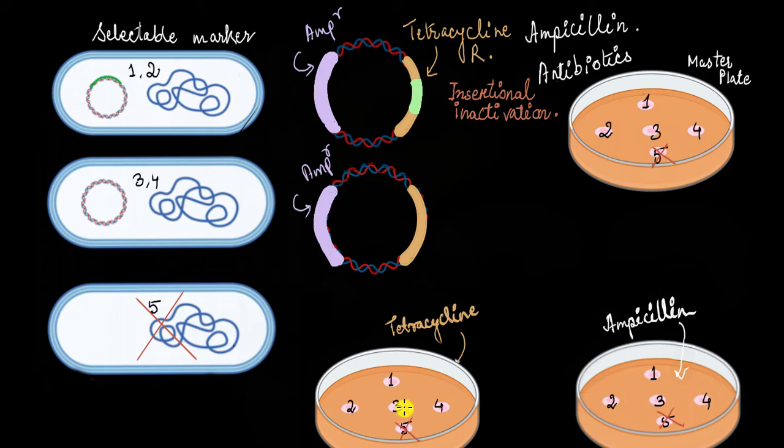If you look back, what actually helped you select the first and second colonies was the antibiotic resistance genes in the vector — the ampicillin resistance gene and the tetracycline resistance gene. We call these genes selectable markers. This was all about antibiotics acting as selectable markers. After watching this video, you should be able to tell what a selectable marker is, how antibiotic resistance genes act as selectable markers, and what insertional inactivation is. If you are not able to answer any of these, you can always go back and watch the video.